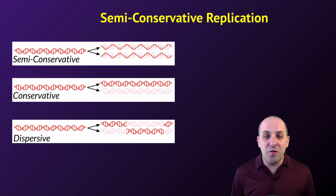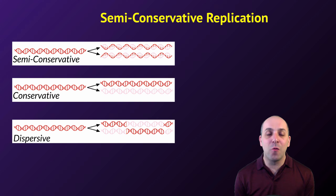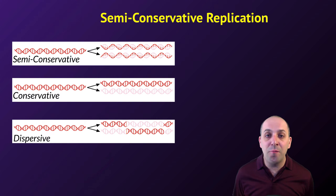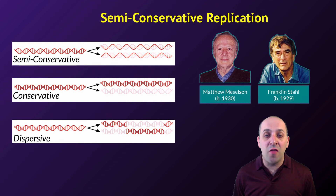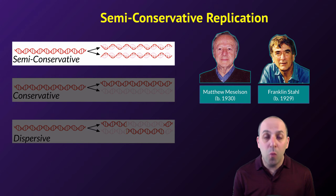Looking at these models, it's already pretty obvious that semi-conservative replication is the way that it should work. But science doesn't work on shoulds — science works on proof. And it's the work of Meselson and Stahl that conclusively demonstrated that the semi-conservative model of DNA replication was, in fact, the way that replication occurs.